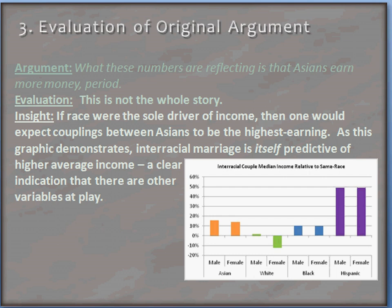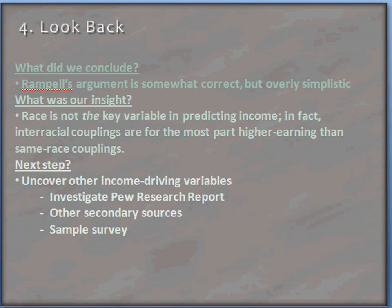Now that we have our visualization, let's evaluate the original argument in context. Rimpel's argument was that these numbers reflected that Asians earn more money, period. Our evaluation is that this is just not the whole story. While Asians did tend to earn more money, there were other issues in play. If race were the sole driver of income, then one would expect couplings between Asians to be the highest earning. As this graphic demonstrates, interracial marriage is itself predictive of higher average income — a clear indication that there are other variables in play.